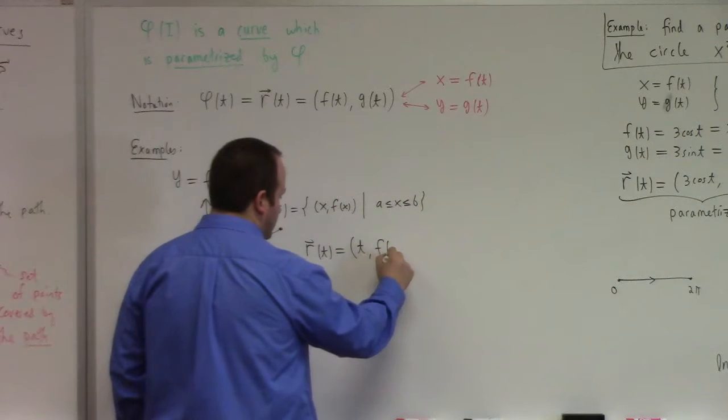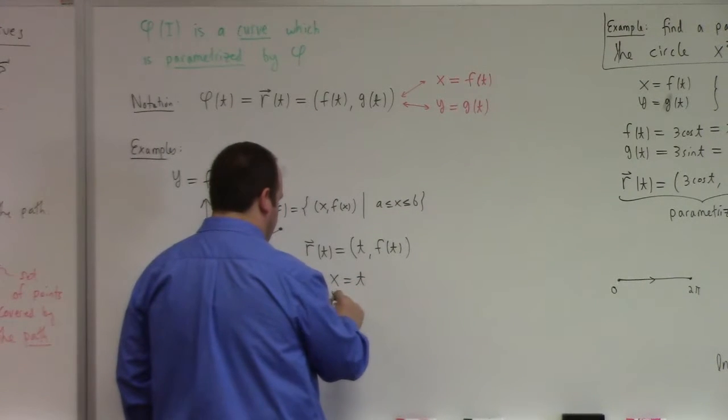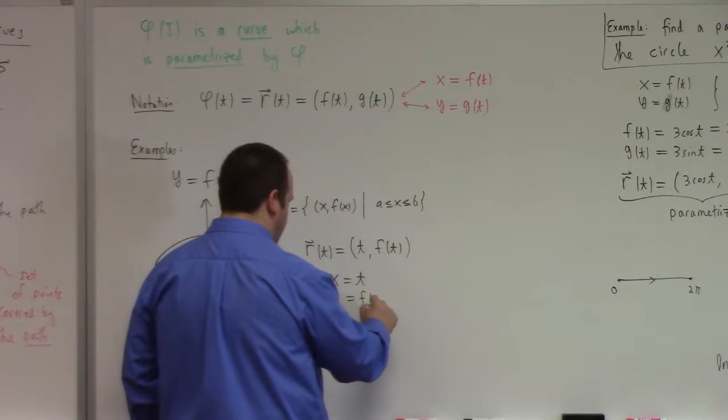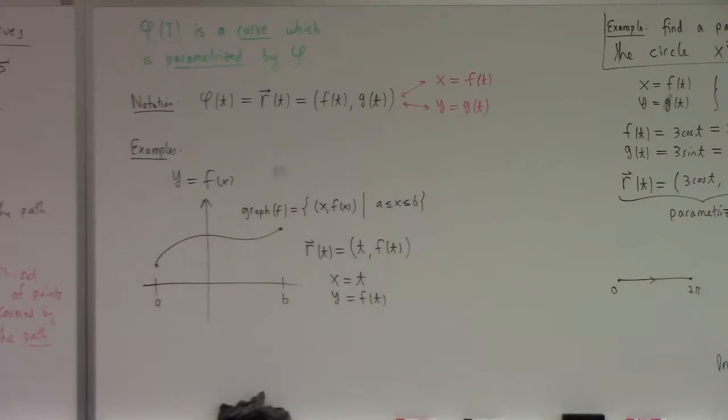So one parameterization of this that you can do is just r of t equals t comma f of t. In other words, x equals t, y equals f of t. This is a very, in some sense, silly parameterization. So any graph can be recast as a parametric curve by this simple move.